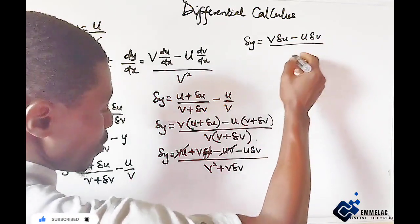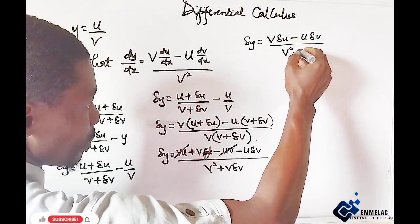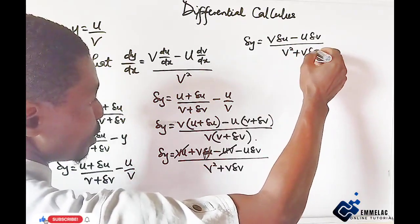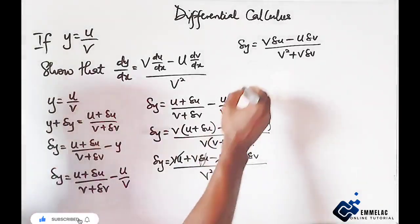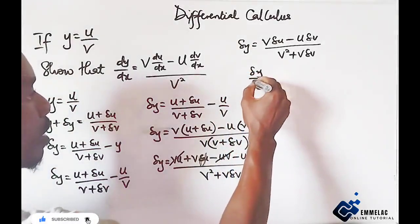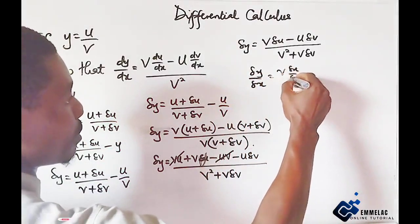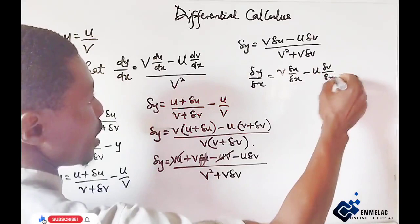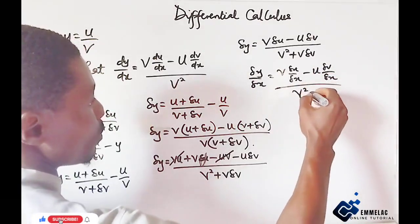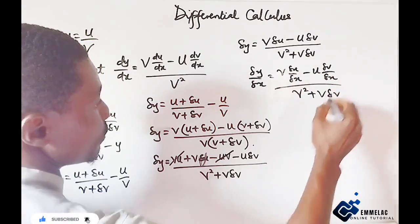Then all over v squared plus v change in v. Divide both sides by change in x. So here you have v change in u over change in x minus u change in v over change in x all over v squared plus v change in v.